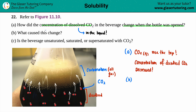Letter B: What caused this change? We kind of just answered that — how does the CO2 come out of the liquid to the top? You had to disrupt the pressure, and in order to do that you open the bottle. If you keep it open for some time, there's not going to be any more carbonation because the pressure between the bottle and the atmosphere is going to equilibrate. That's when your cola goes flat. So the answer for B: what caused this change? You just open the bottle.